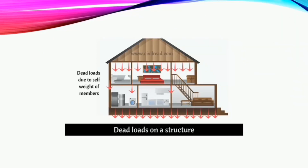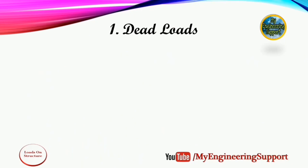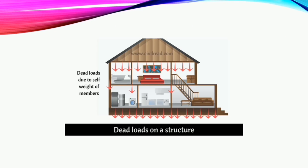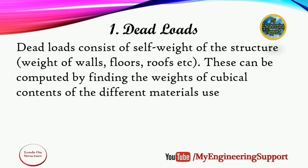تو سب سے پہلا load جو structure پہ ہوتا ہے وہ ہے dead load۔ Structure کی خود کی دیواروں، چھت اور floors کا جو load ہوتا ہے وہ dead load of structure ہوتا ہے۔ یہ load structure کی construction میں use ہوئے materials کا cubical content weight calculate کر کے نکالا جا سکتا ہے۔